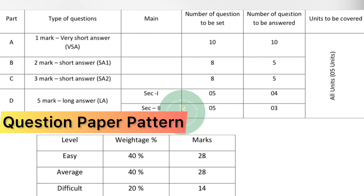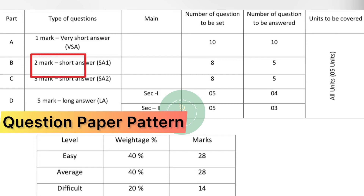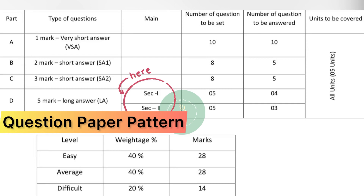You will have totally 4 parts: Part A, Part B, Part C, and Part D, as you can see on the screen. The type of questions will be — Part A: 1 mark, very short answers; Part B: 2 marks, short answers; Part C: 3 marks, short answers; Part D: 5 marks, long answers. Part D will have Section 1 and Section 2, whereas Part A, Part B, and Part C will not have any sections.